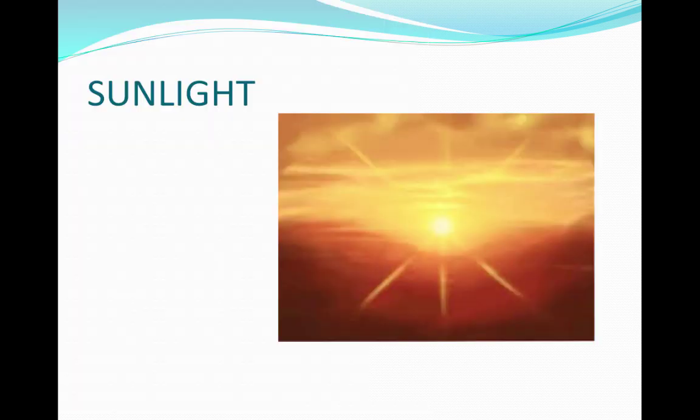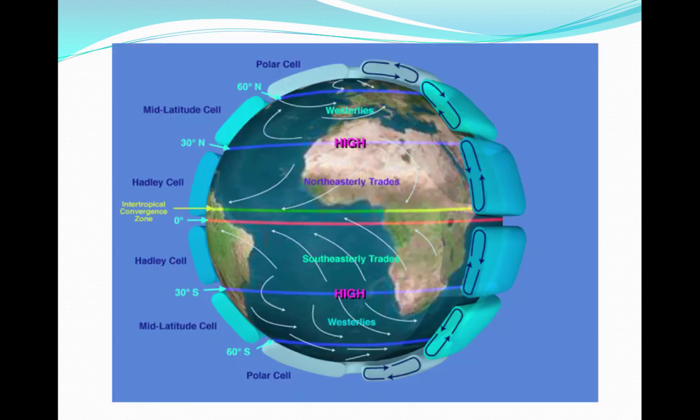Climate is influenced by sunlight. When sunlight strikes the equator, it is at its most direct angle. When sunlight strikes the poles, it is at its least direct angle, and therefore the sunlight is less intense. The intense angle of sunlight at the equator affects air circulation and precipitation.